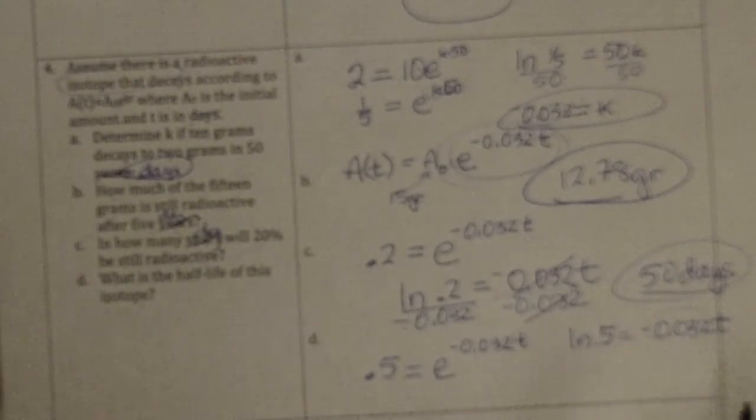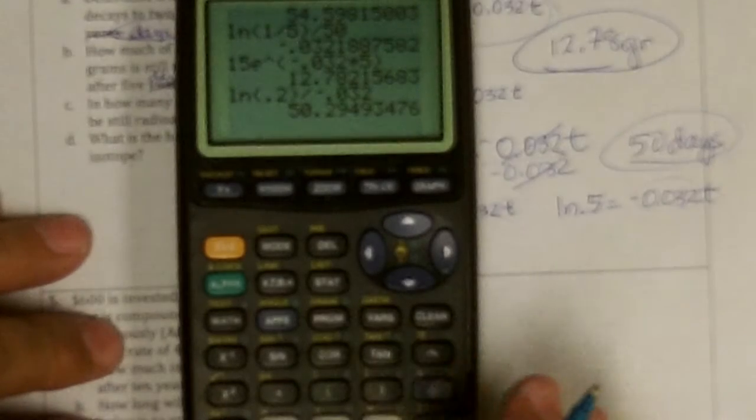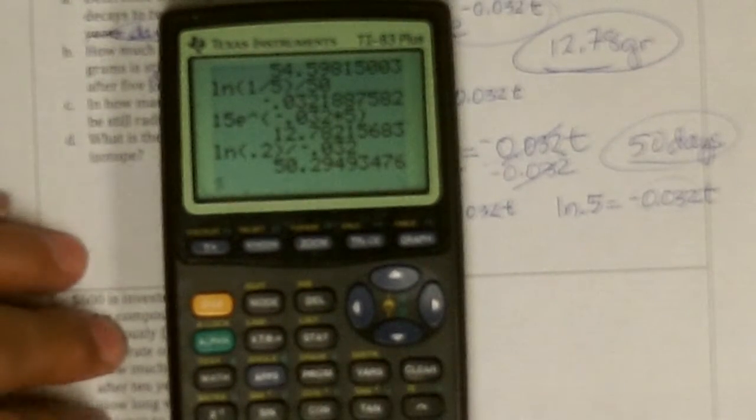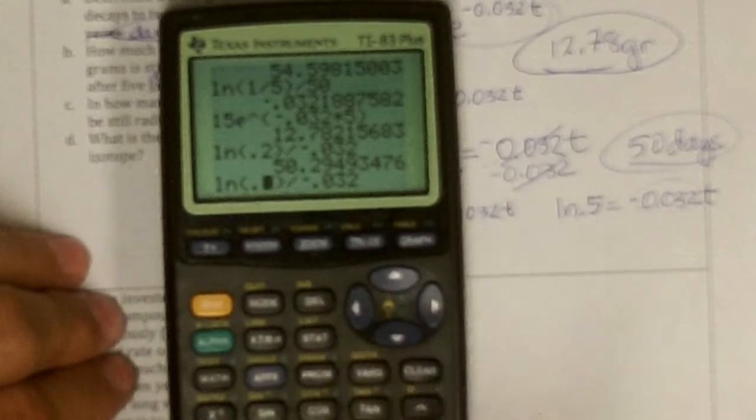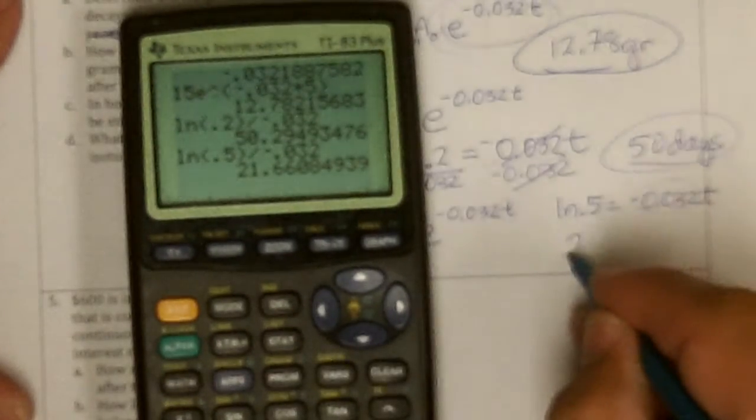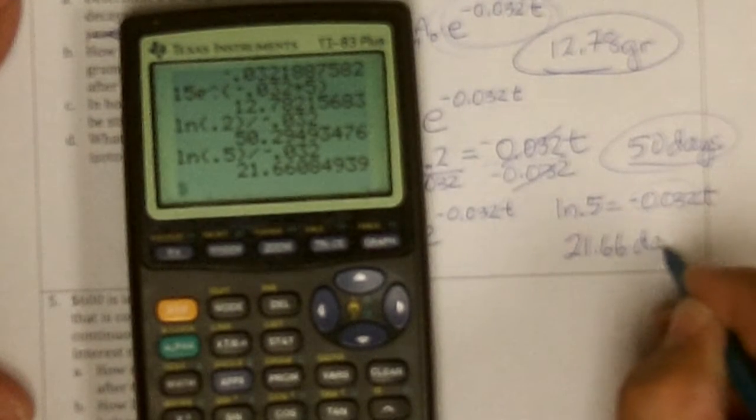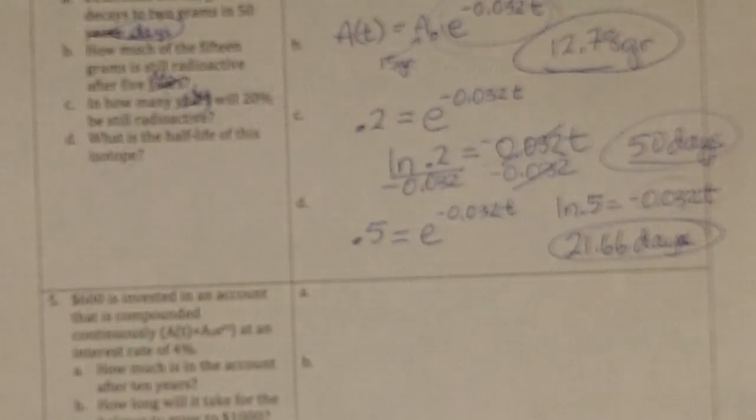Divide by this. And so I'm going to have ln 0.5. I'm going to have exactly the same thing I had before, except now with a 0.5 there. And it comes out to be 21.66 days, since I'm doing this all in days. Okay, one more to go.